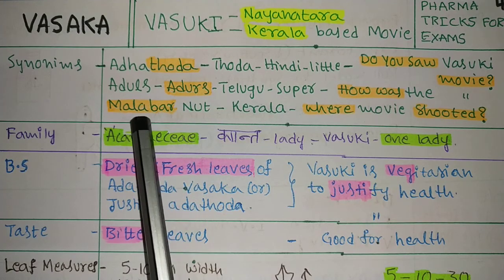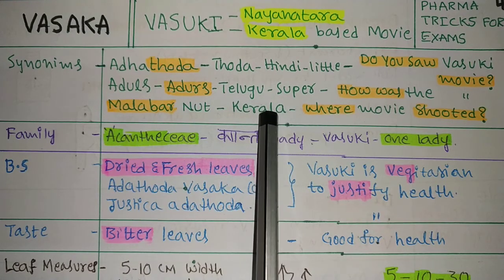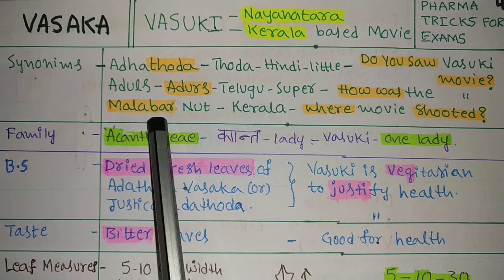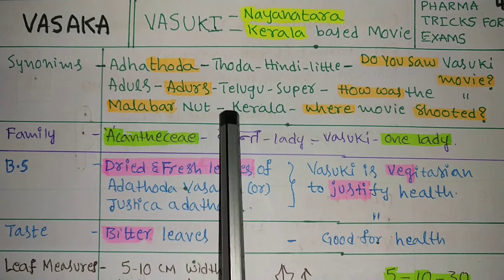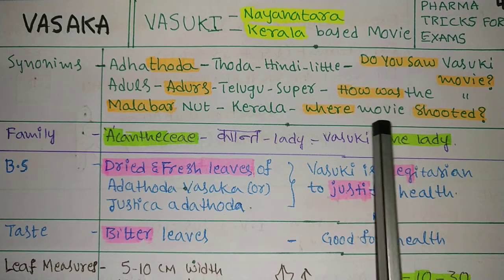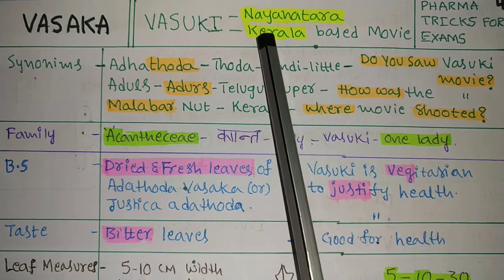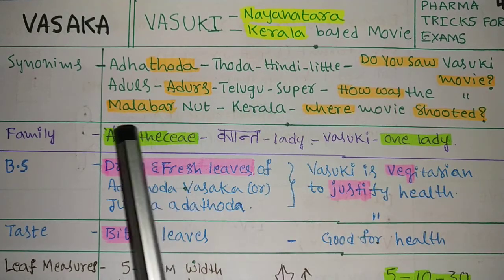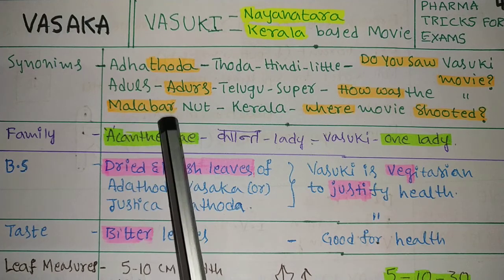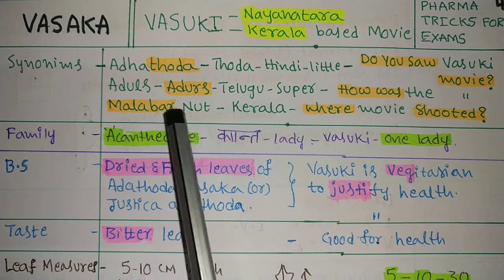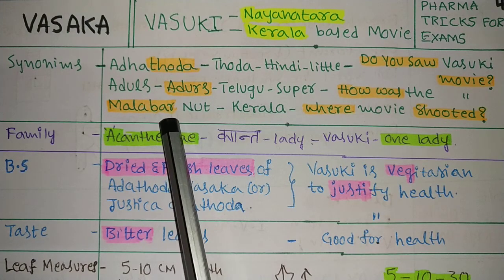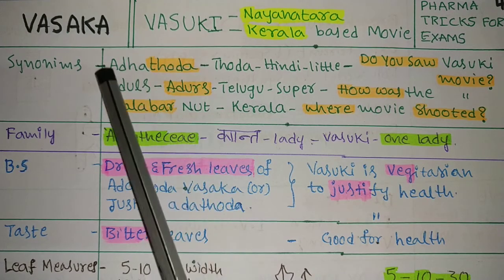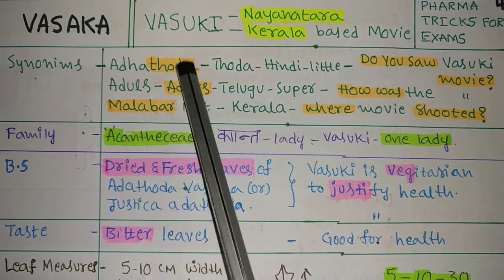Next, Malabar nut. Malabar is another name of Kerala. Where was the movie shot? It is a Kerala-based movie. Kerala's other name is Malabar, like Malabar jewelry, which is also based in Kerala. These are the three important synonyms of Vasaka.